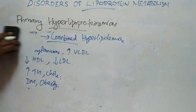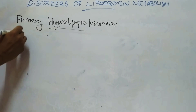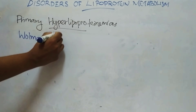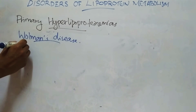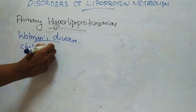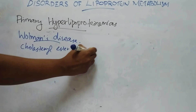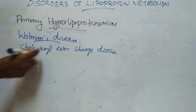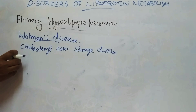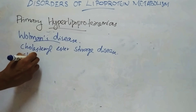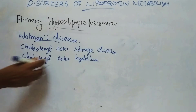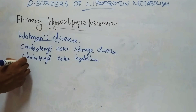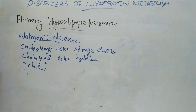Another disease is Wolman's disease, also known as Cholesterol Ester Storage Disease. It is due to the deficiency of the enzyme cholesterol ester hydrolase in lysosomes. It is characterized by increased cholesterol. That covers primary hyperlipoproteinemias.